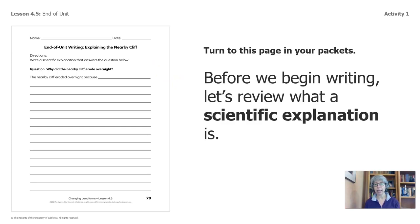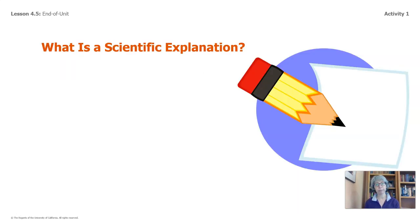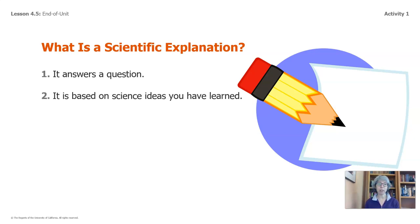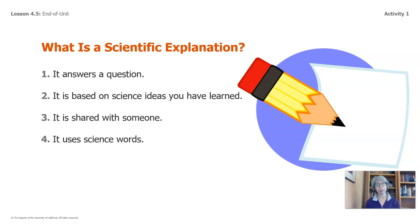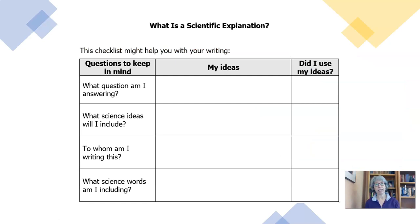Before we begin writing, let's review what a scientific explanation is. What is a scientific explanation? It answers a question. It's based on science ideas you have learned. It is shared with someone. And it uses science words. You have this in your packet, and if you don't have the packet, you can pause the video to think about this. I took the question and the points of the scientific explanation and turned them into questions so that you can think about what you want to include in your writing.